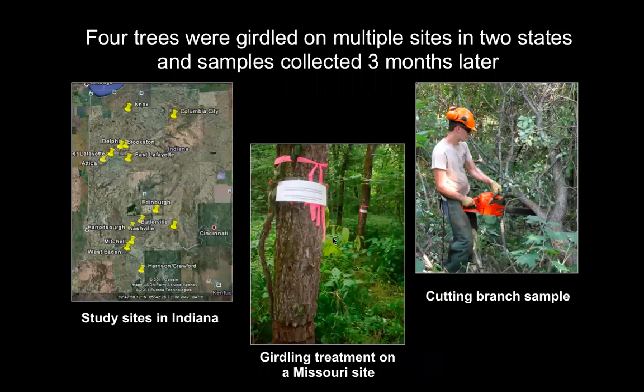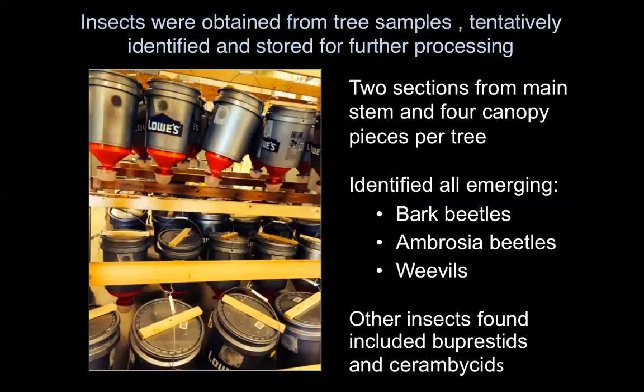From those beetles that emerged from girdled trees, we identified the putative fungal pathogens carried by representatives of those emerging insects. In Indiana, four trees were girdled on multiple sites in two states — Indiana and Missouri. Samples were collected three months later. At each site, four trees were girdled and treated with glyphosate, left standing for three months, after which we felled those trees and cut branch and main stem samples. The insects were tentatively identified and stored for further processing.